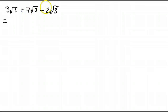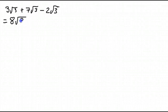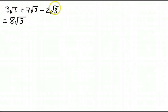All we do is add the numbers: 3 plus 7 is 10, minus 2 is 8 — so we have 8 root 3's. You can almost treat this as 3x plus 7x minus 2x, just combining like terms in this manner.